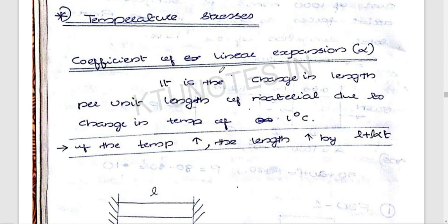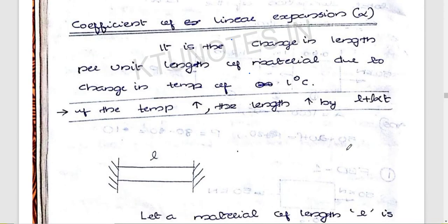We will discuss the coefficient of linear expansion. It is the change in length per unit length of the material due to change in temperature. Temperature increases, length increases. The length increase is given by L alpha T.